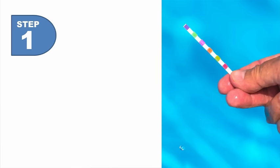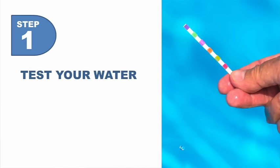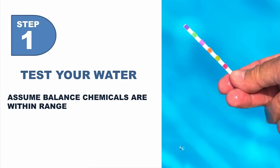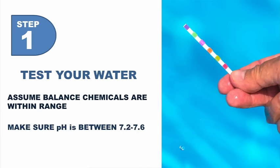So the first thing we want to do here — step one — is test our water. Anytime we have a water issue, we start with testing the water. First of all, let's check and make sure our balanced chemicals are right. I'm going to assume that your balanced chemicals are where they're supposed to be. If not, you need to go ahead and adjust them, or else trying to clear the pool back up is going to be a lot more work. Number two, check your pH and make sure it's between 7.2 and 7.6 — anywhere within this range is fine. Then check your free chlorine level and keep that number in mind because we're going to use it later on.